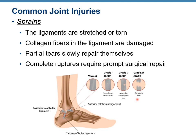Common joint injuries include sprains, which happen when ligaments are stretched or torn. Collagen fibers in the ligament are damaged. Partial tears slowly repair themselves, but complete rupture requires surgical repair. We have different grades based on degree of damage: grade one sprain, grade two sprain, and grade three sprain, which involves a complete tear.